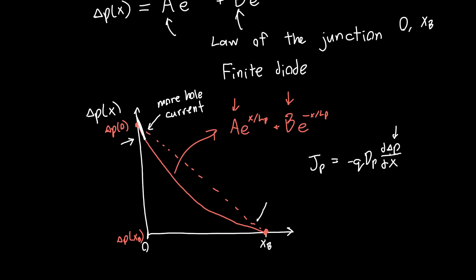And near x equals xB, so by the time the holes get to the end of the base, so let me just draw what that looks like here. So by the time the holes travel all the way to the end of the base, there's actually less hole current than we would expect, because this slope is smaller. So there's less hole current than we'd expect, because the derivative is smaller.